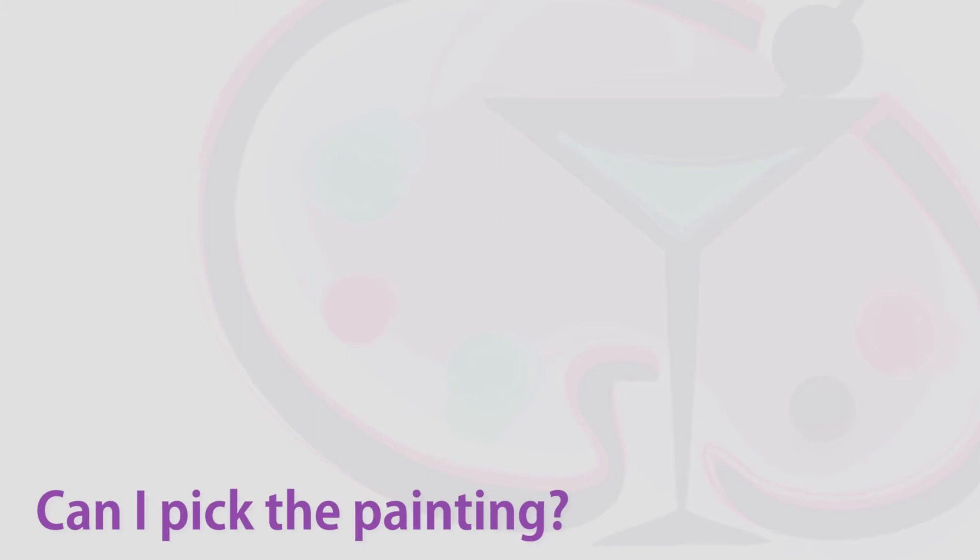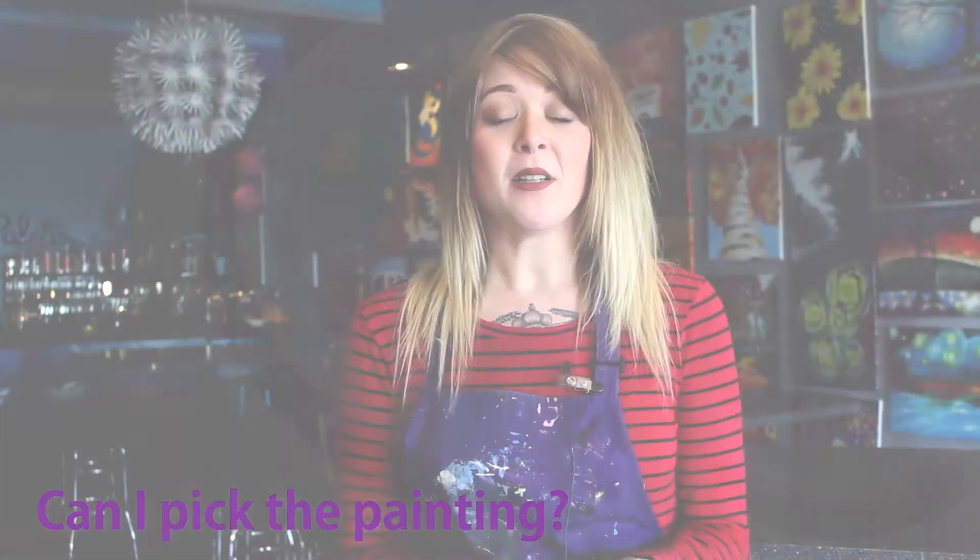For our public classes, which is our standard structure, you are not able to pick your own painting. Instead, we offer a calendar on our website that tells you what painting is featured and what time each class will be. For example, if you're interested in painting dandelions, you can look at the calendar, pick the day that painting is scheduled, and sign your group up for that day. For a private event, however, you can pick any painting from our entire catalog.